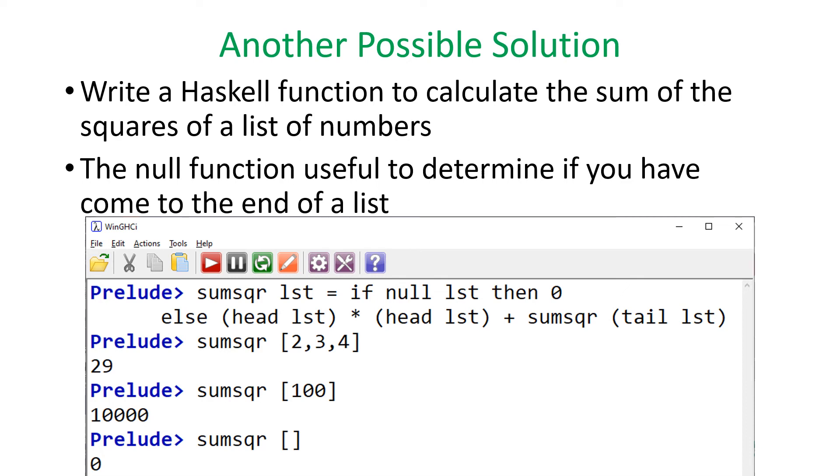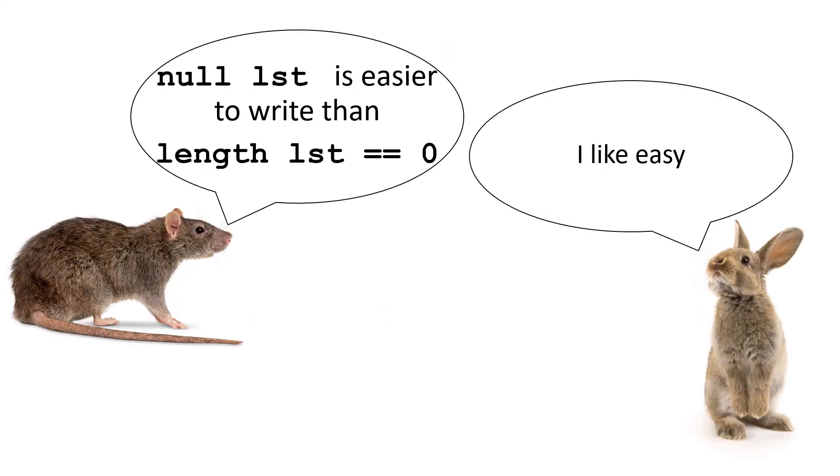We could have used the null function to determine the end of the list. Null is true if the list is empty. So in this example, it's almost the same as the previous solution, but instead of saying if length of list equals zero, we just have null list. Null list is easier to write than length of list equals zero. I like easy.